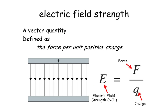Electric field strength is a vector quantity, so it has a direction, and it's defined as the force per unit positive charge. You can calculate electric field strength using this equation: E equals F over q, where electric field strength is in newtons per coulomb, force is in newtons, and q is the charge in coulombs.